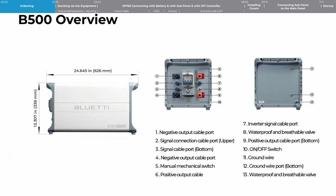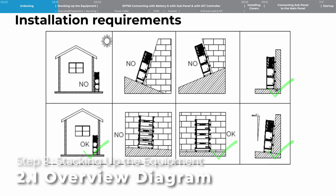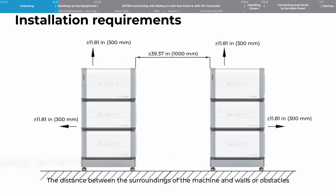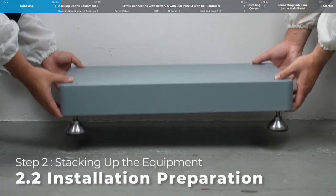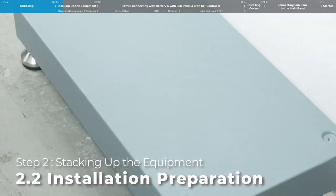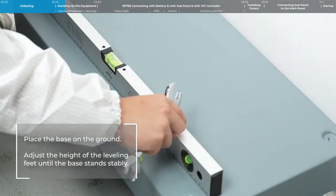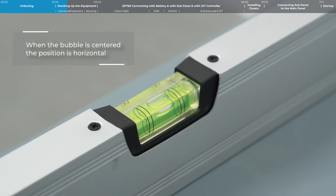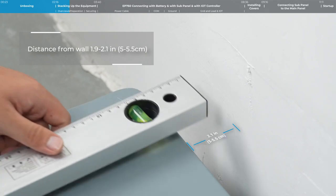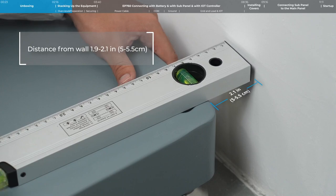Step 2: Stacking up the equipment. To start, stack up the EP760 and B500. Place the base on the ground and adjust the height of the leveling feet until the base is stable. Keep a distance of 5 centimeters to 5.5 centimeters between the base and the wall.